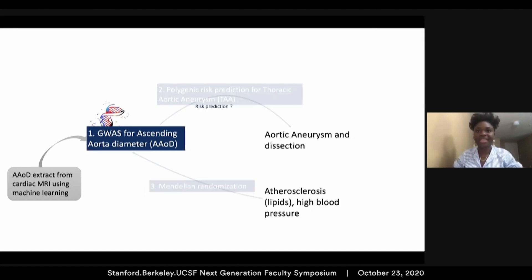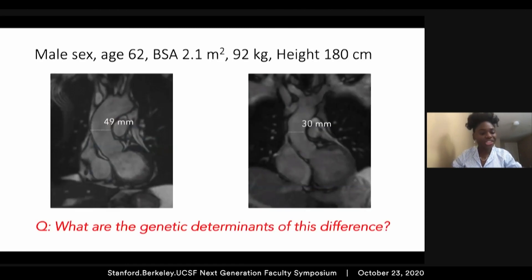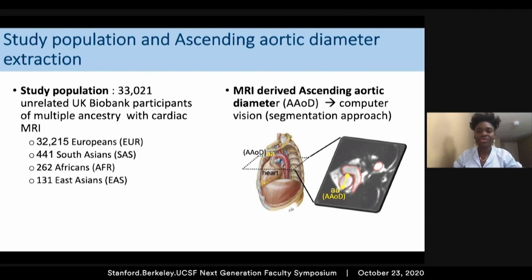I'll first present the GWAS of aorta diameter, which was conducted using aorta diameter extracted from cardiac MRI using machine learning. The question we are trying to answer is: what are the genetic determinants that can explain the difference in the diameter of the aorta between two individuals with the same sex, age, and body morphology? Our study population was based on the UK Biobank, in which we have over 33,000 unrelated individuals from multiple ancestry groups with cardiac MRI and genetic information available. We derived the ascending aorta diameter using a transversal image of the cardiac MRI using machine learning techniques — specifically computer vision and segmentation approaches to locate and measure the diameter for each individual.